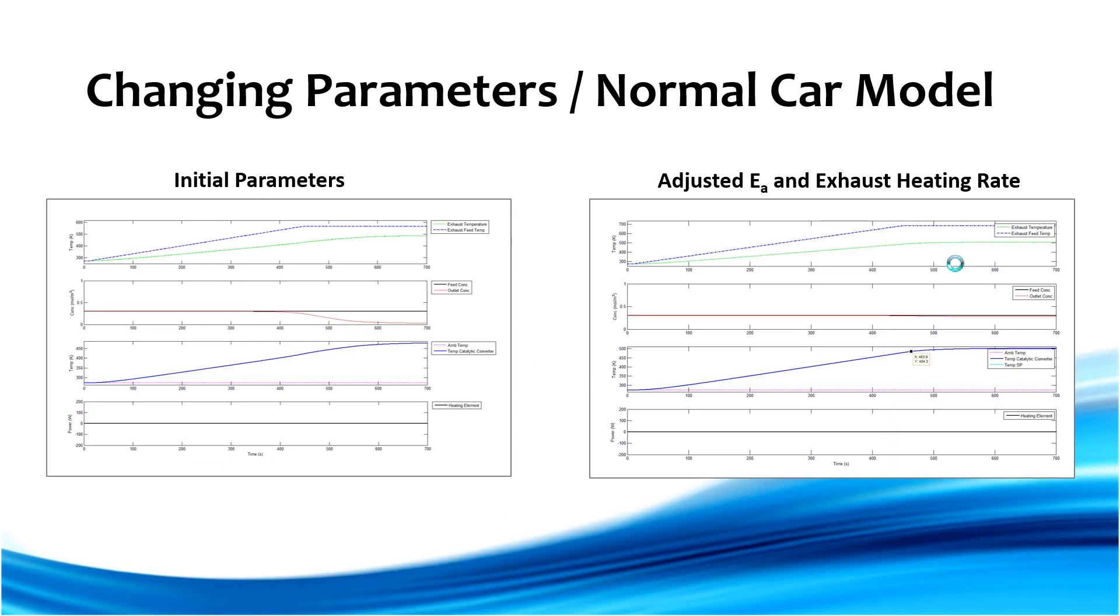So in order to validate our model and make sure that it was accurately modeling the data, we compared the performance of the model to the data that we had. So this plot here on the left shows the initial performance with the initial parameters that we obtained from research and from some order of magnitude guesses. With these initial parameters, the catalytic converter did reach a light-off temperature, as you can see by the change in reaction there. But that light-off temperature occurred at about 400 Kelvin. And based on the data and our research, we were expecting it to be closer to 477 Kelvin.